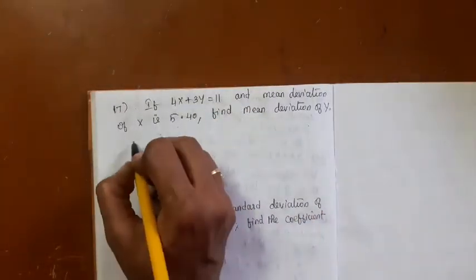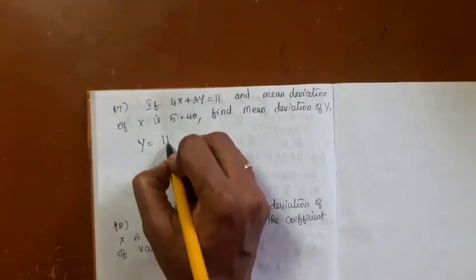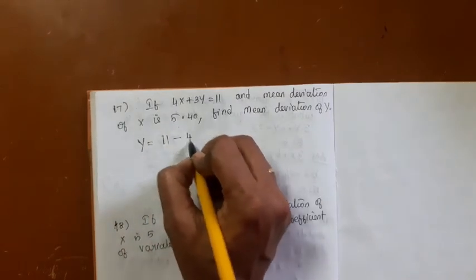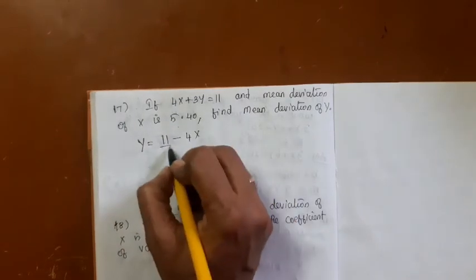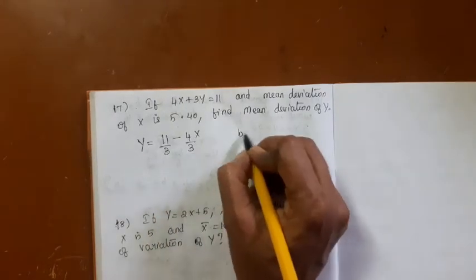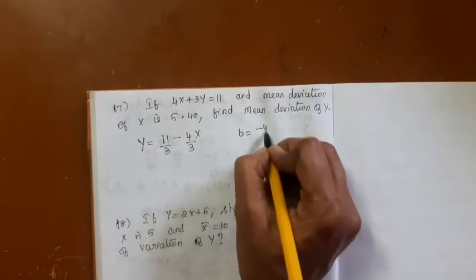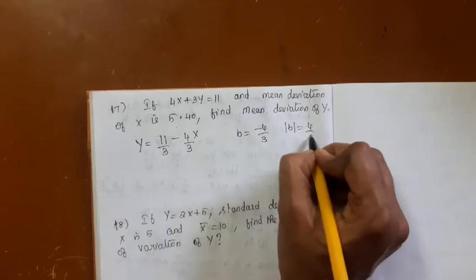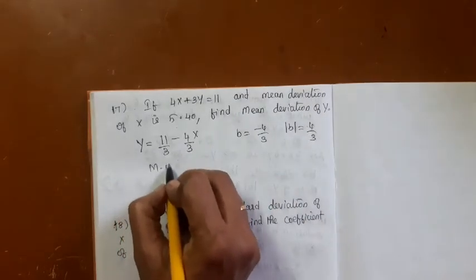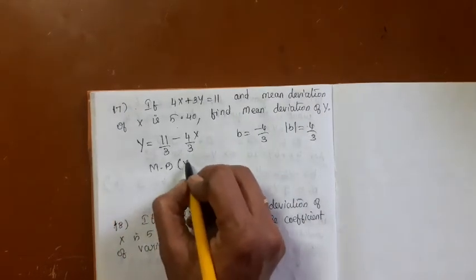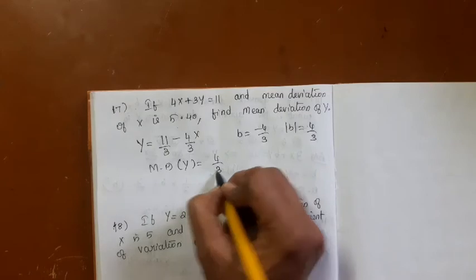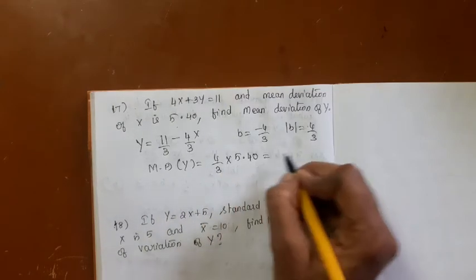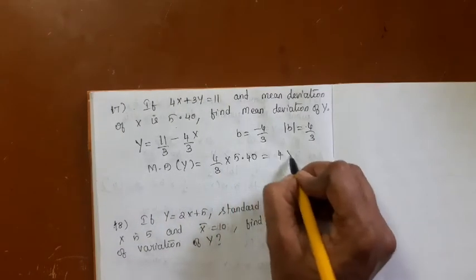For the next problem, writing y = something gives b = -4/3, so |b| = 4/3. Mean deviation of y = (4/3) × mean deviation of x = (4/3) × 5.40 = 7.2.